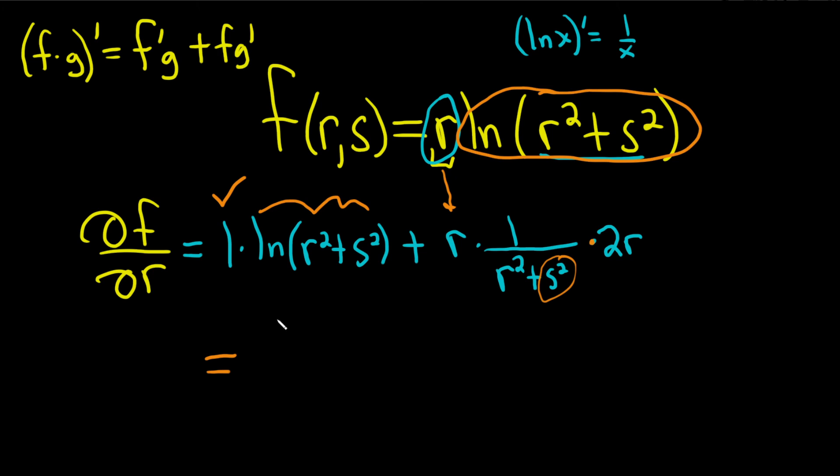The last thing to do is just clean this up a bit. So this is the natural log of r squared plus s squared plus, and then you just multiply these r's. So you get 2r squared over r squared plus s squared.